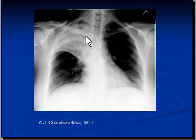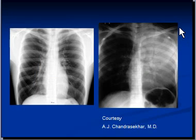This example shows consolidation of the right upper lobe, and you can see an air bronchogram through the consolidated lung. In consolidation, the bronchi of the lungs containing air are often clearly visible through the consolidated lung, including branches that would normally be difficult to see.